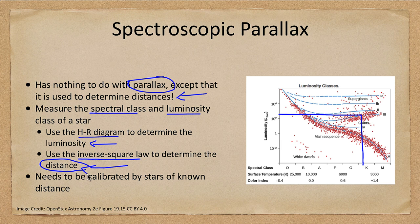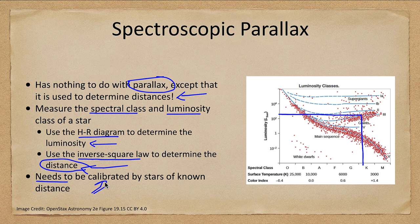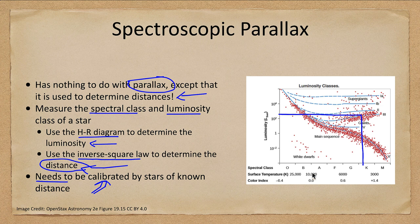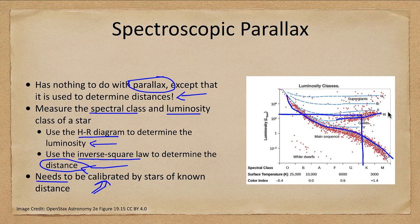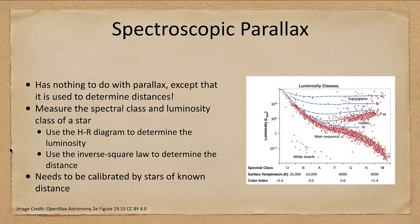Then just like other methods, use the inverse square law to get the distance. Again, it needs to be calibrated by stars of known distance. We have to calibrate exactly where the main sequence falls and where the giant branch falls. As you get up to supergiants, it gets really hard to match those up. But once you do that, you can then use this method to determine distances to the stars.